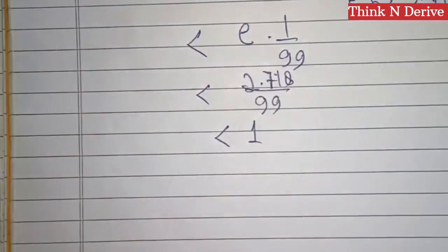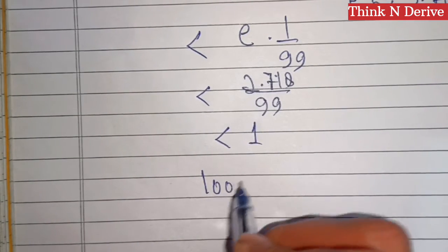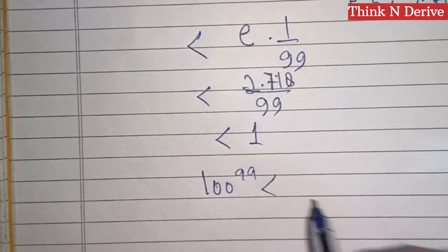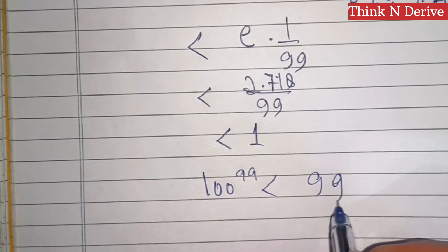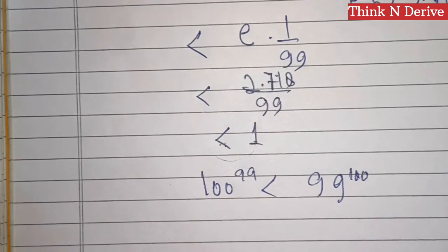So we have 100^99 is less than 99^100. Hope you got this. Thank you so much for watching.